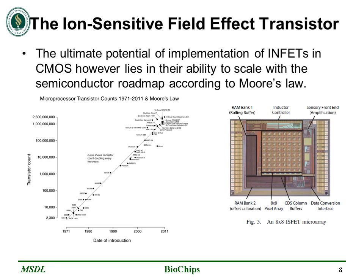More importantly, this scaling has shown particular advantage in the area of DNA sequencing, whereby an increasing number of INFET sensors per chip allows for parallel non-optical detection leading to a faster as well as cheaper method of genome assembly. In one of the research papers, an INFET chip was presented with 1.2 million sensors capable of sequencing up to 25 million bases in a two-hour run, which is very impressive.